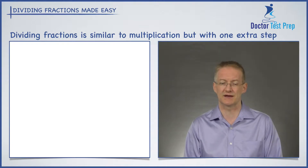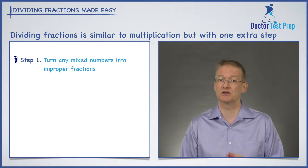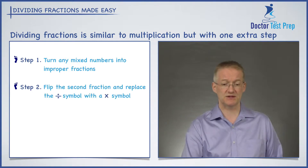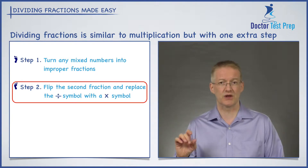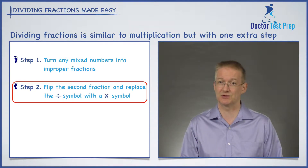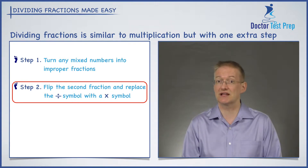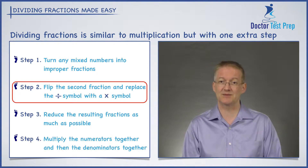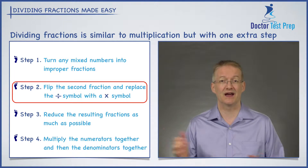Let's go through all the steps together. Step number one: if we have any mixed numbers, the first thing we do is convert them into improper fractions, just like we did when we were multiplying fractions. Step number two is the new step — when we're dividing, we take that second fraction, flip it upside down, and convert the divide symbol into a multiply symbol. Once step two is done, we treat it just like a multiplication problem. We reduce the fraction as much as possible, then multiply the denominators together and multiply the numerators together, and that's our answer.